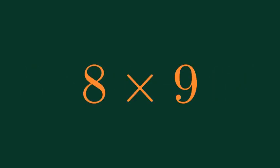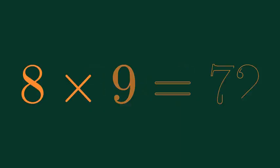What is 8 times 9? 8 times 9 is equal to 72.